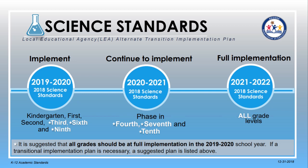If that is not a possibility for your local education agency, please review the suggested transitional implementation plan. It suggests that implementation of the 2018 science standards should begin in grades kindergarten, first, and second, with an emphasis on 3rd, 6th, and 9th grade to allow students to be ready for the spring of 2022 state science assessment. In the school year 2021, schools should phase in 4th, 7th, and 10th grade standards, followed by 5th, 8th, and 12th grade standards in the year 2021–22 to reach full implementation.